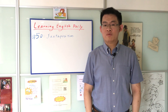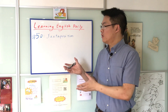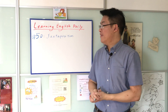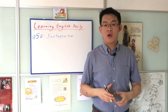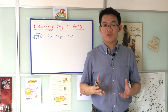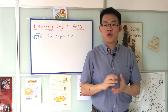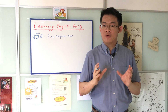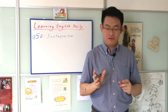Hello everybody, welcome to another episode of Oscar's English World. We continue our series Learning English Daily and the word of the day is juxtaposition. Juxtaposition occurs when somebody places two things together and the two things look very different from each other.